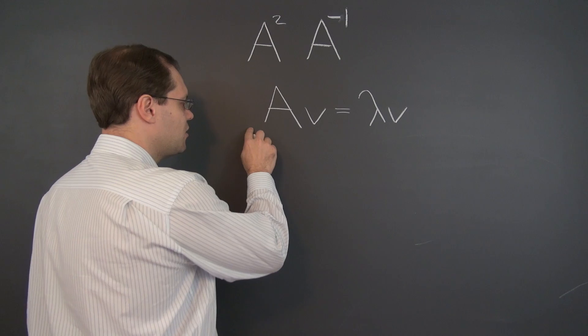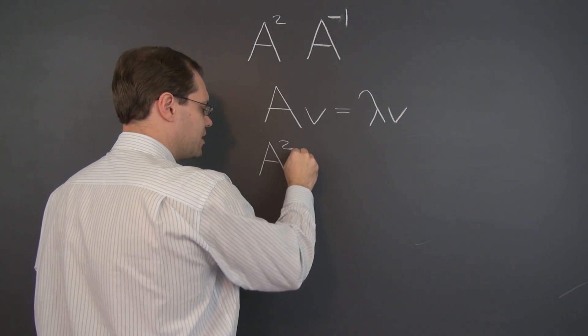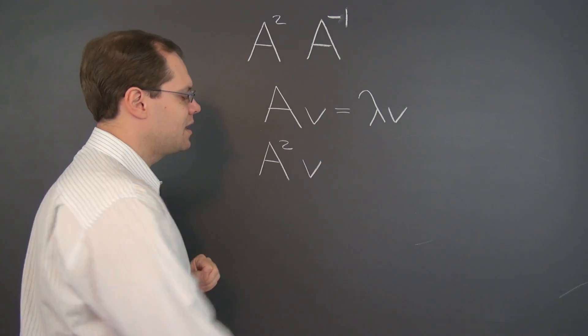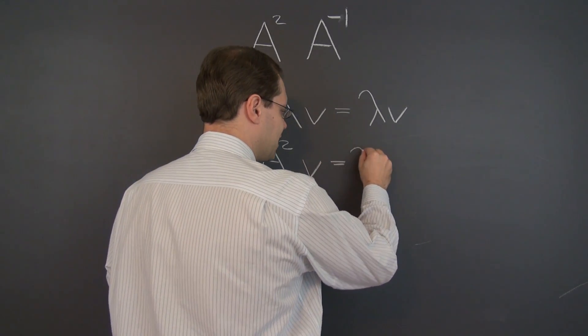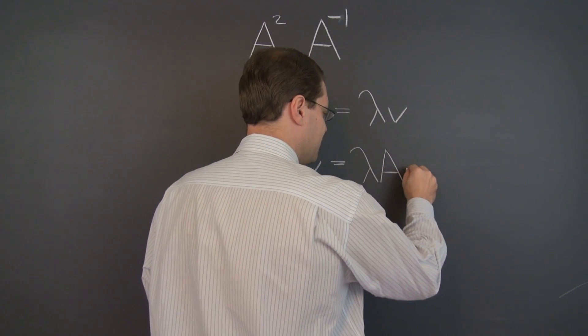So on the left-hand side, we would get A times A, which is A squared of V. And on the right-hand side, we will have lambda, which is just a number, so it can come out to the left, times A V.